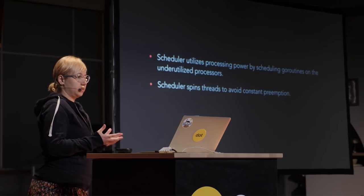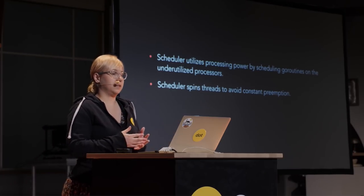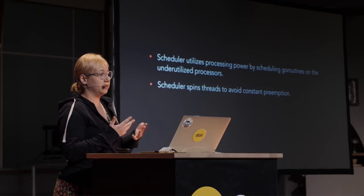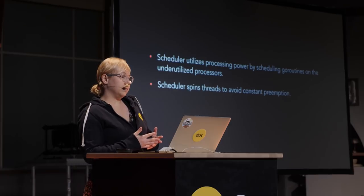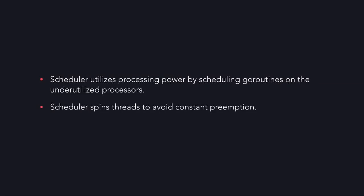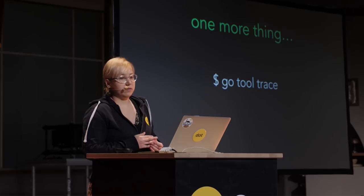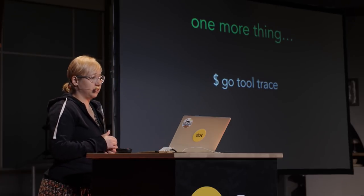To conclude, the Go scheduler tries to better utilize processing power by scheduling work on underutilized processors and does this by avoiding global locks as much as possible. It also spins threads to avoid high occurrences of preemption, trying its best to keep currently running OS threads running as much as possible.